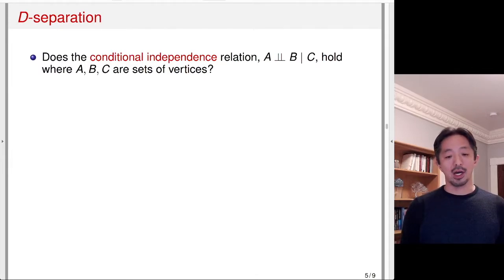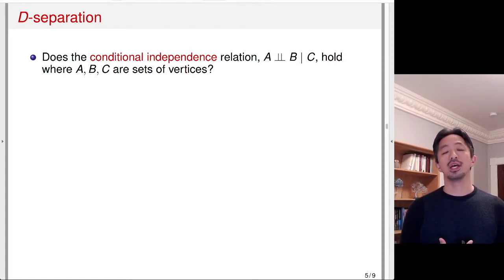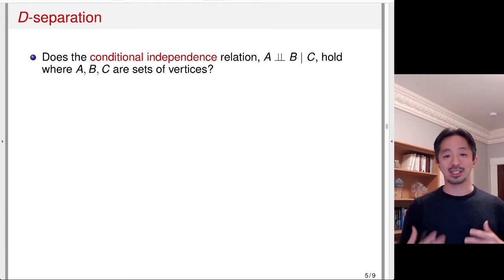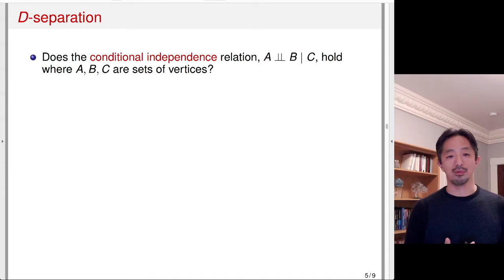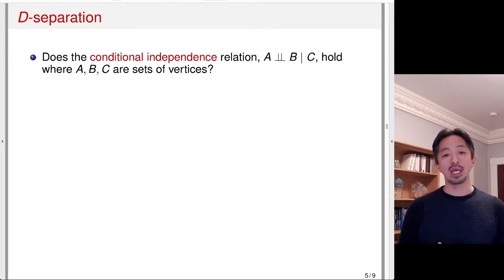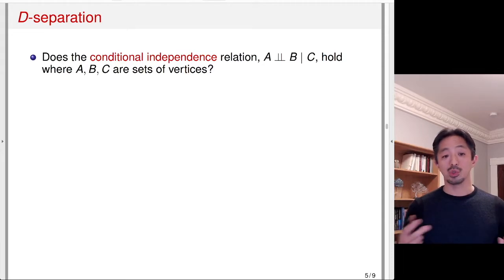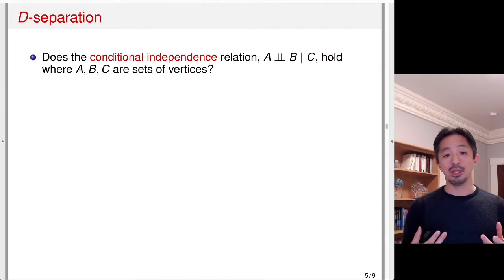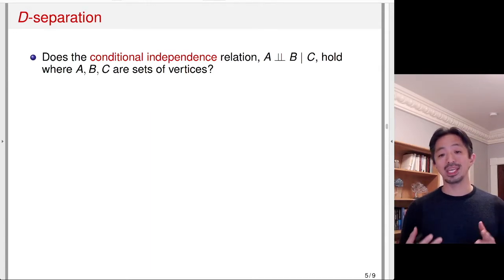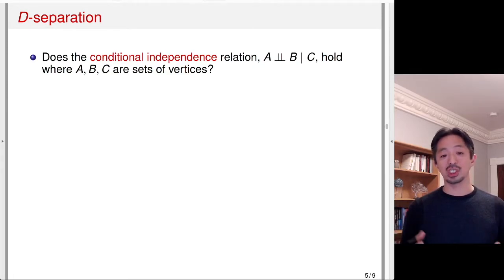Given these DAG setups, we can discuss how the graph can be useful for detecting some of these relationships between the variables. The first thing I'm going to cover is something called D-separation. D-separation is a way to figure out whether variables on a DAG are conditionally independent. So we can ask the question: does the conditional independence relation — A is conditionally independent of B given C — hold, if A, B, C are some sets of vertices of the DAG?